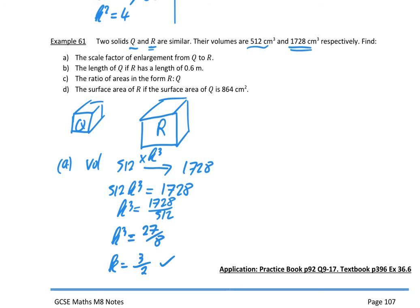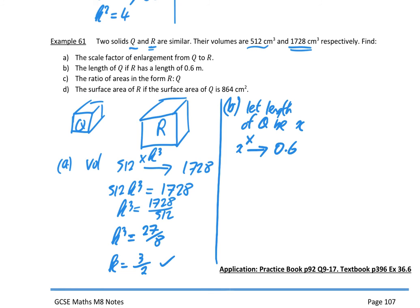Part B: find the length of q if r has a length of 0.6. Let the length of q be x. Then x goes to 0.6 by multiplying by 3 over 2, so x times 3/2 equals 0.6, meaning x equals 0.6 divided by 3/2, which is 0.6 divided by 1.5. You get x equal to 0.4.